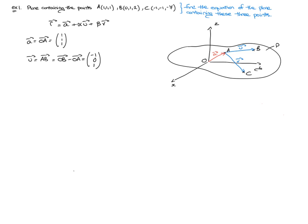Similarly, we have the vector V, which is equal to the vector AC, which by definition equals the position vector of point C minus the position vector of point A. Just as before, we calculate: negative one minus one is negative two; negative one minus one is also negative two; and negative seven minus one will give us negative eight.